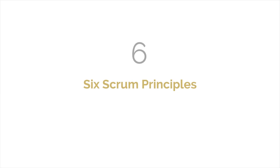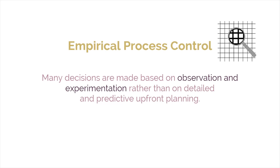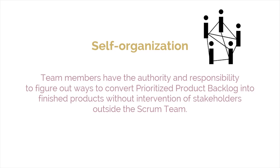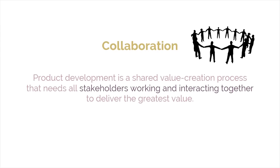The six Scrum principles include the following. Empirical process control, in which many decisions are made based on observation and experimentation, rather than on detailed and predictive upfront planning. Self-organization, which implies that team members have the authority and responsibility to figure out ways to convert the prioritized product backlog into finished products without the intervention of stakeholders outside of the Scrum team. Collaboration, in which product development is a shared value creation process that needs all stakeholders working and interacting together to deliver the greatest value.